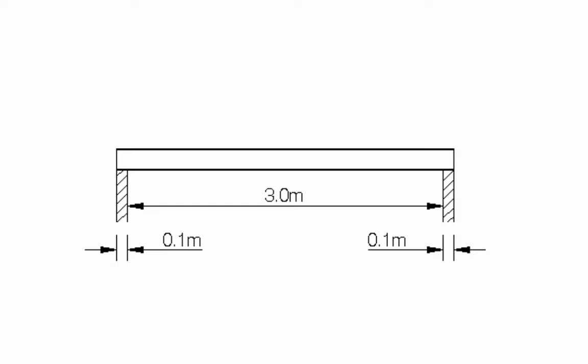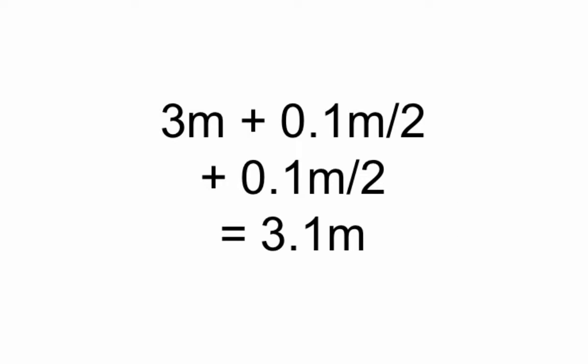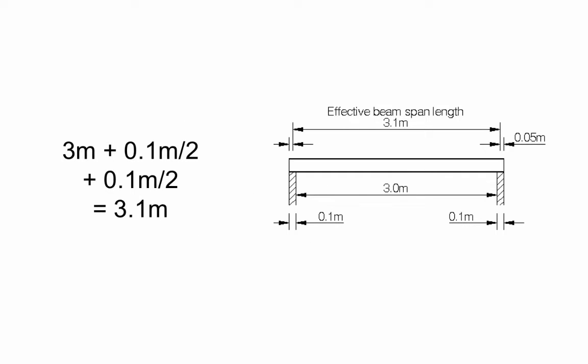For example, if the clear distance between supports is 3 metres and the beam has a minimum end bearing length of 0.1 metre at both ends, you would work out the effective span length like this: 3 metres plus half of 0.1 metre plus half of 0.1 metre equals 3.1 metres.